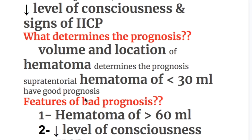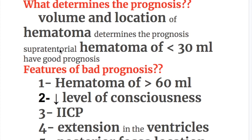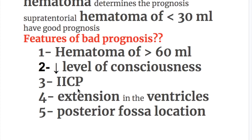What determines the prognosis of hemorrhagic stroke? The volume and location of the hematoma determines the prognosis. A supratentorial hematoma of less than 30 milliliters has a good prognosis. Features of bad prognosis include: number one, hematoma of more than 60 milliliters.